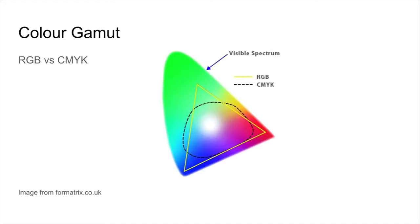This first slide — the rainbow colored area is all the colors that your eyeball can see. The yellow triangle is all the colors that your computer monitor or cell phone can display on screen, and the black dashed line represents the colors that a printer can produce. You can see it's not all the same, and it's possible to design a jersey or logo on your computer that a printer will not be able to print out.